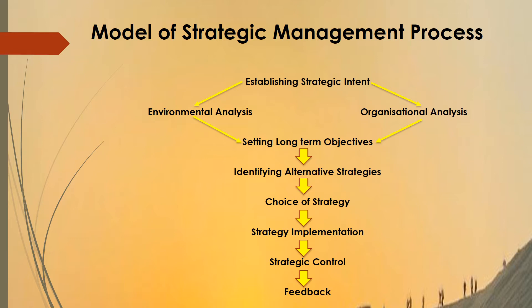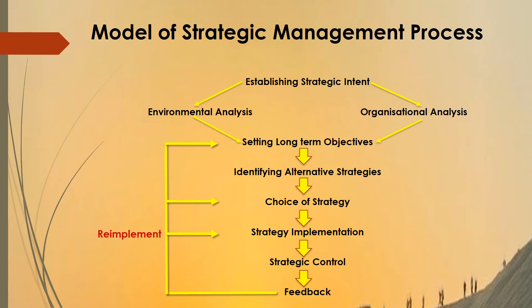After feedback is received, the next step is rectifying errors. If there is any discrepancy in strategy implementation, it has to be re-implemented. Or if any rectification is required in choosing a strategy, then the strategy must be reformulated. Sometimes there may be changes required in the objectives, in which case the objectives are reset. This is the model of the strategic management process explained in detail in this video.